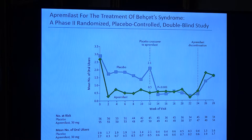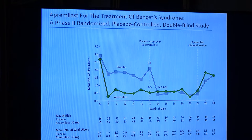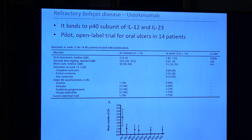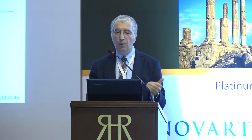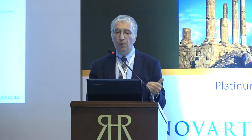Apremilast is recently licensed for the treatment of Behçet's disease after a very successful phase three trial. However, although it is a successful treatment, it was tested only on oral ulcers. It is helpful for mild manifestations but will possibly not be as effective for severe disease manifestations. Some open-label trials for refractory oral ulcers showed the efficacy of ustekinumab, a biologic drug targeting the P40 subunit of IL-23 and IL-12. Three-monthly injections provide a milder suppression — it can be helpful for some oral manifestations but not all.